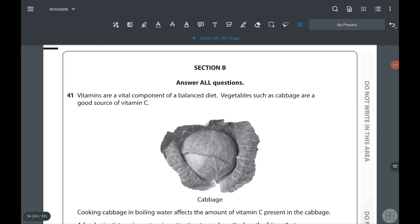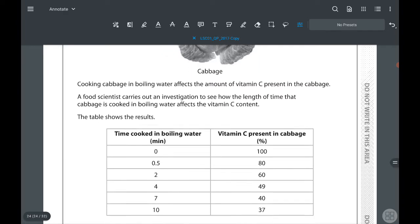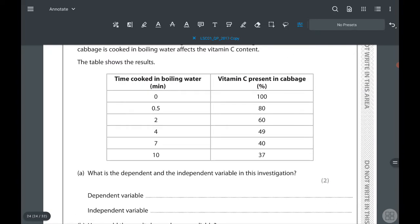Let's look at question 41: vitamins are a vital component of a balanced diet. Vegetables such as cabbage are a good source of vitamin C. We know there are five types of nutrition you need to take in a balanced diet: carbohydrate, protein, fats, vitamins, and minerals. They are talking about vitamins here. Cooking cabbage in boiling water affects the amount of vitamin C present in the cabbage. A food scientist carries out an investigation to see how the length of time that cabbage is cooked in boiling water affects the vitamin C content. The table shows the results. The cooking time is given from 0, 0.5, 2, 4, 7, 10. Vitamin percentages are decreasing from 100 to 80, 60, 49, 40, 37.